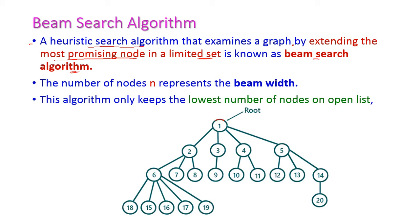When we come to this particular graph, this is the root node, and this root node has four children. Among these four children, we need to select only the most promising nodes — that is, the nodes with the lowest heuristic value. We also need to set the beam width. For example, if the beam width is two, then among these four children, we select the two nodes with the minimum heuristic value for further expansion.